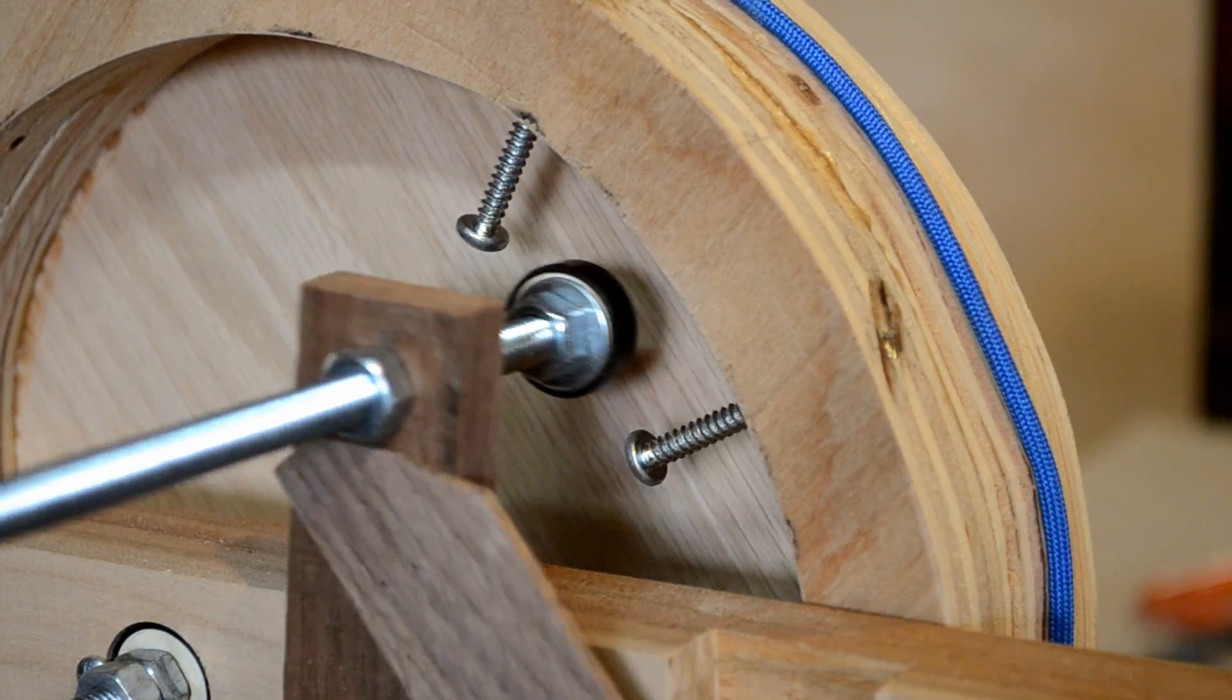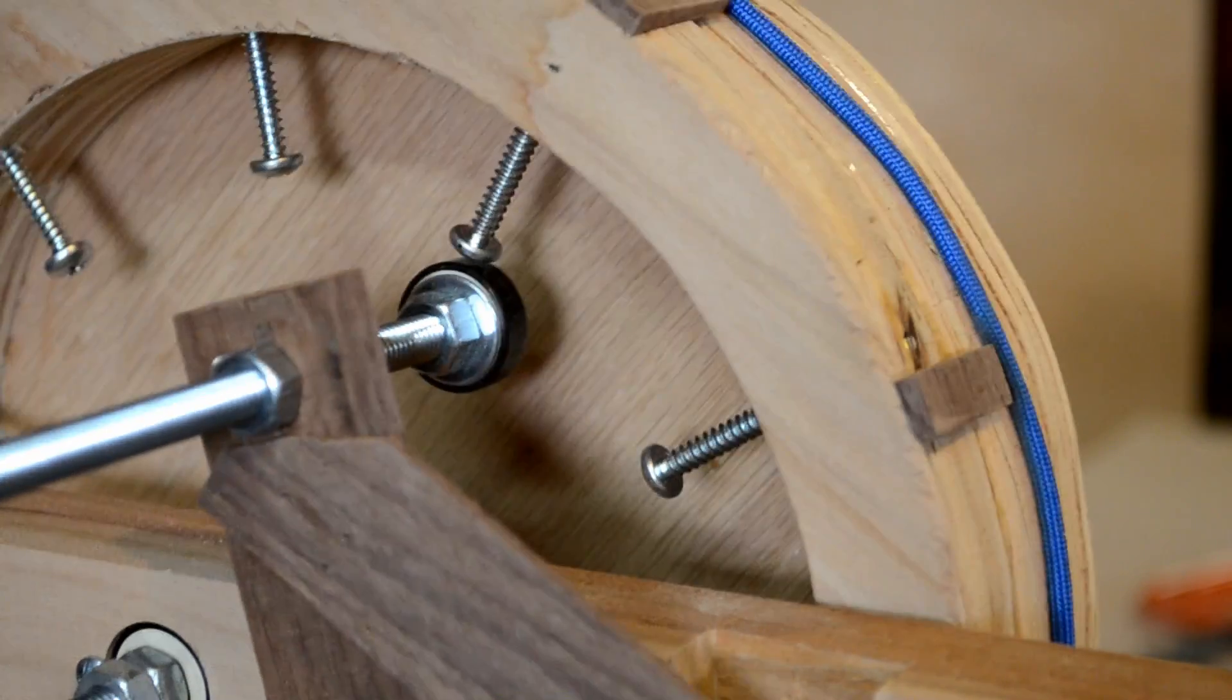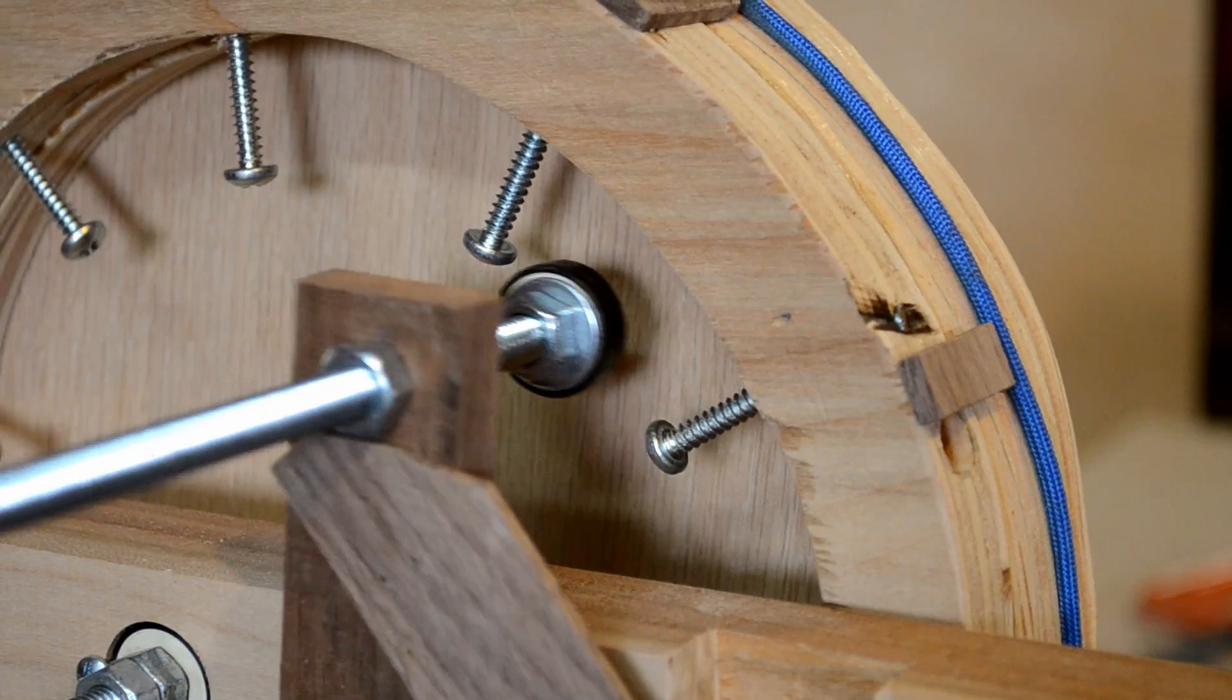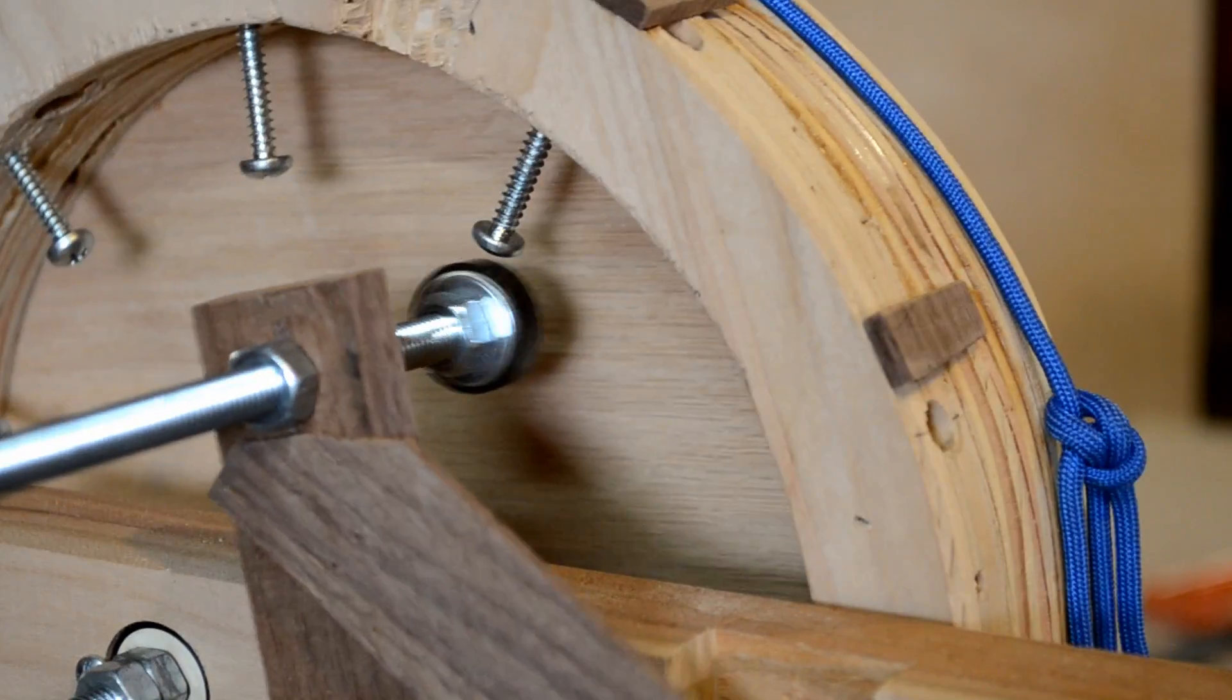Part of the reason why those clamps wobble so much is that the screw here actually jumps. You'll see the bearing doesn't come all the way over, so it makes it bounce, and that's kind of a waste of energy as well.